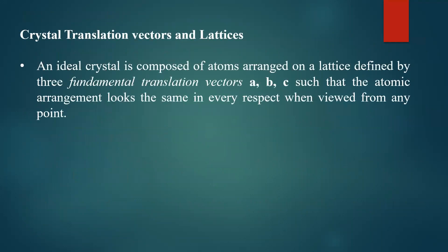An ideal crystal is composed of atoms arranged on a lattice defined by three fundamental translation vectors a, b, c, such that the atomic arrangement looks the same in every respect when viewed from any point. Imagine a Cartesian coordinate system with x, y, and z axes. If you move the entire system along a certain axis — translating it — the symmetry does not change.